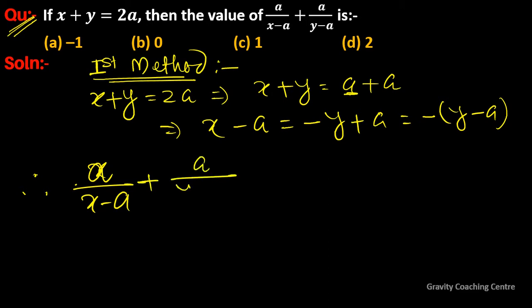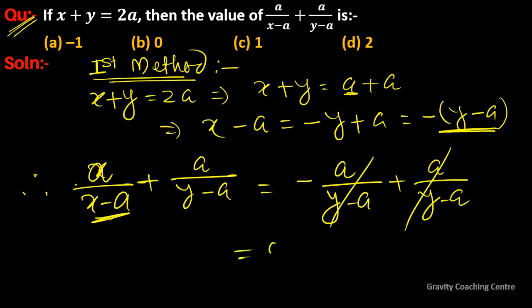Therefore a upon x minus a plus a upon y minus a. In place of x minus a, we substitute the value we found: negative a upon y minus a plus a upon y minus a. These cancel out, so it equals zero. Option b is the correct answer.